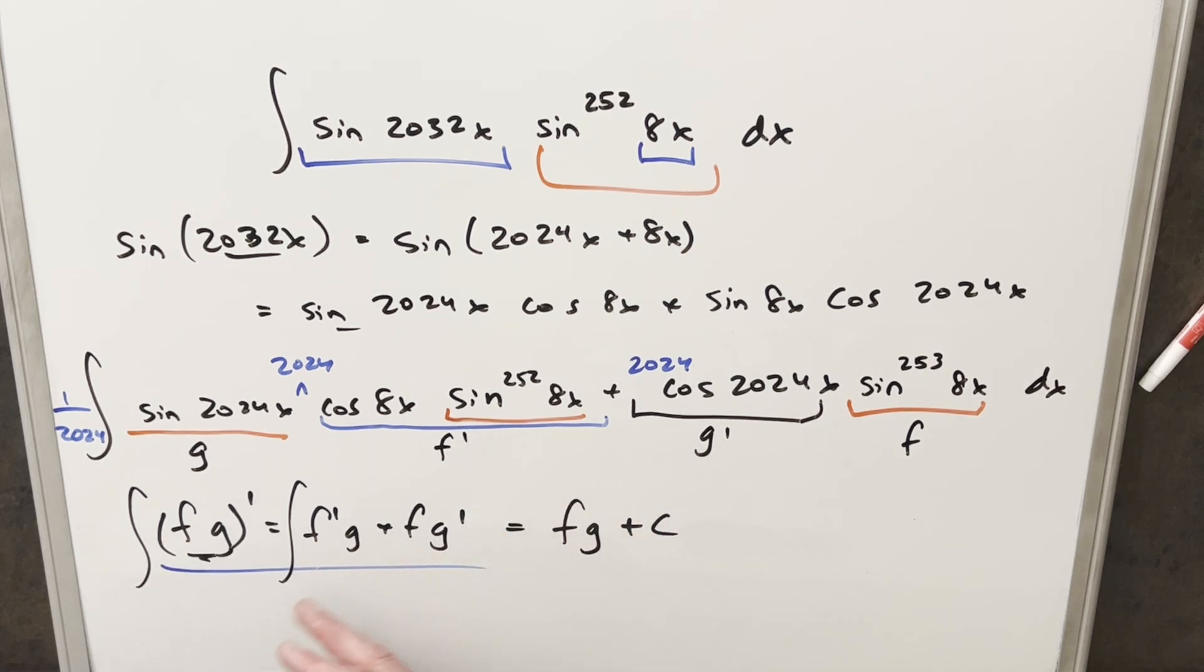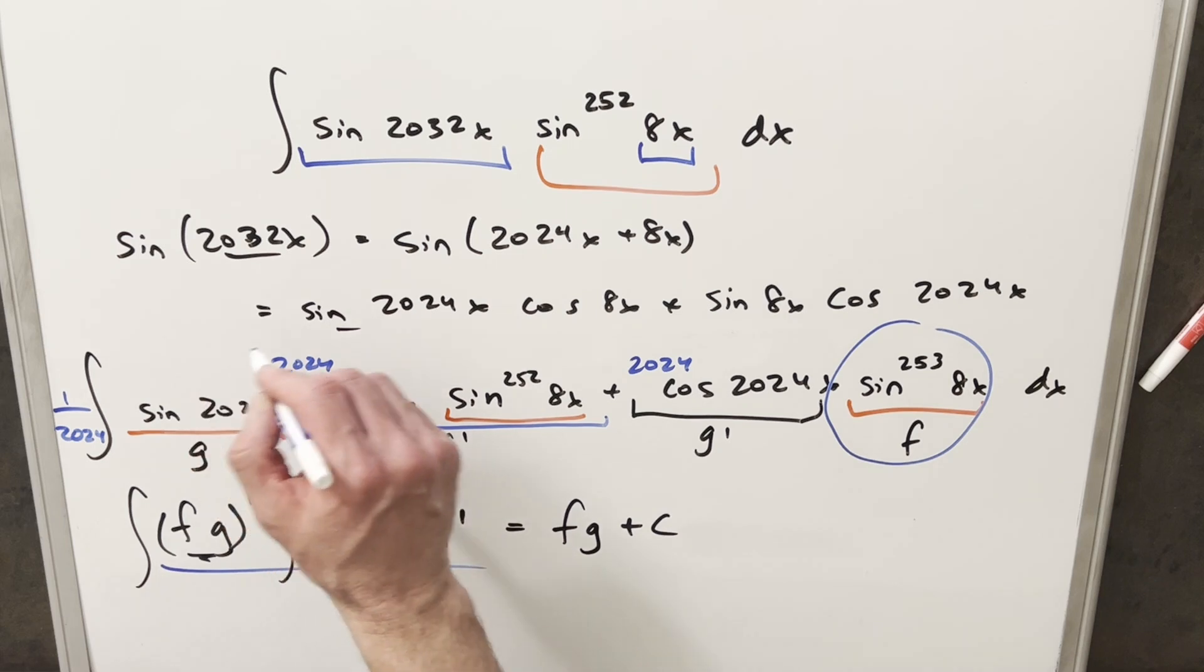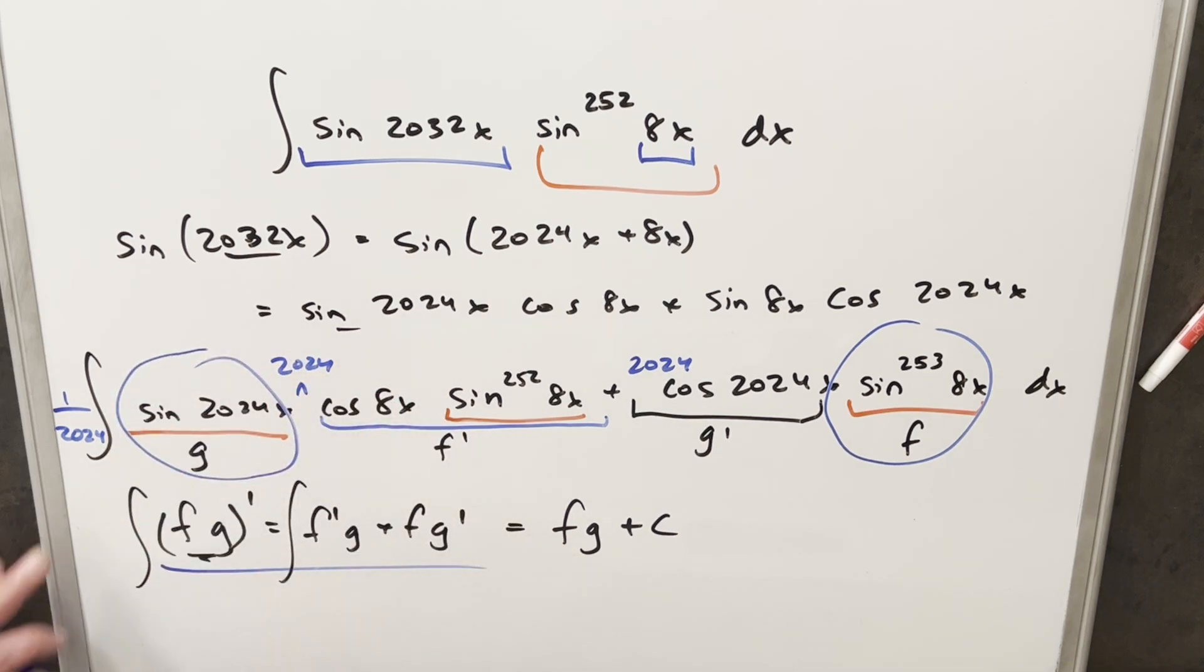But again, our integral is in exactly the right form. We have f prime g here, and then here we have f g prime. So our solution is going to come from f and g, we have over here, we just need to remember this, we just need to remember this one over 2024.